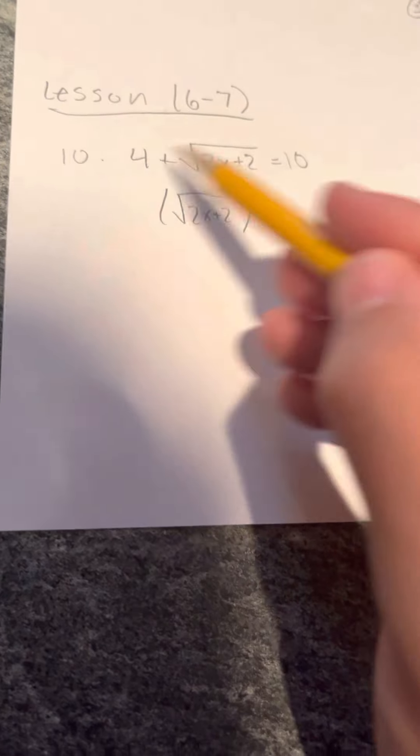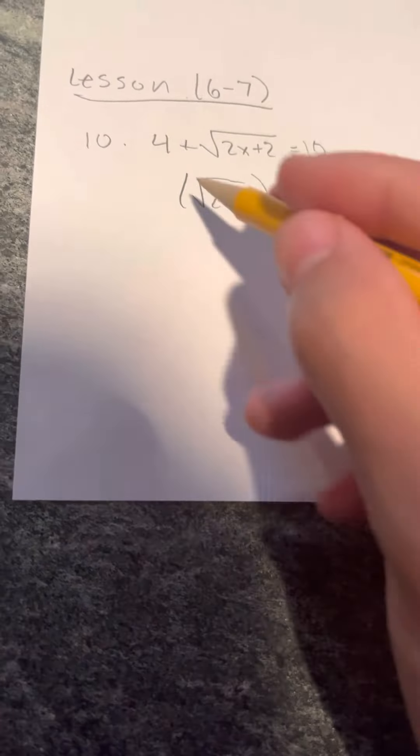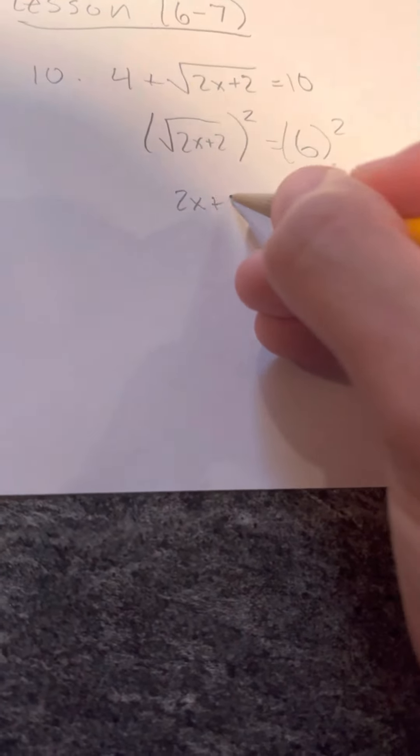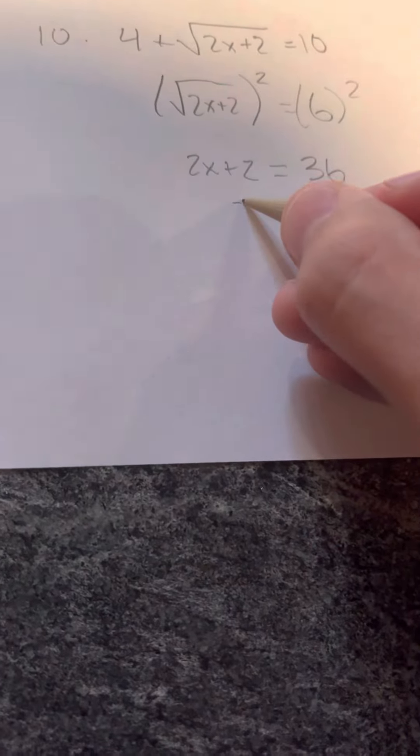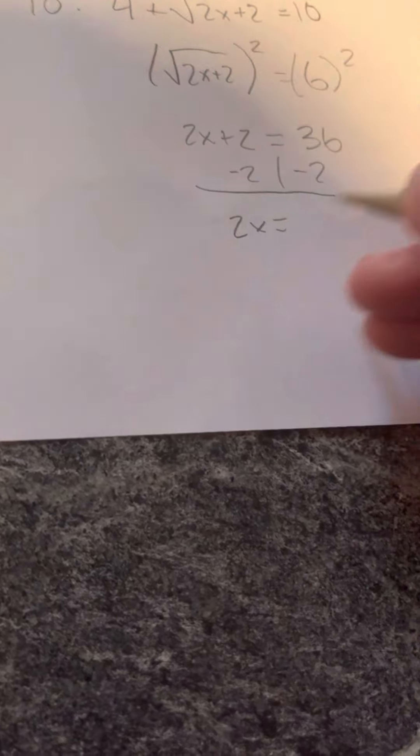Last problem from lesson 6-7, question number 10: 4 plus the square root of (2x plus 2) equals 10. Subtract 4 from both sides so the square root of (2x plus 2) equals 6. Square both sides: 2x plus 2 equals 36. Subtract 2 from both sides: 2x equals 34. Divide both sides by 2: x equals 17.